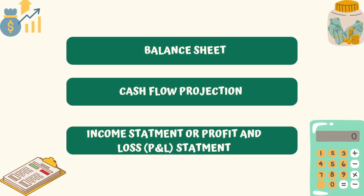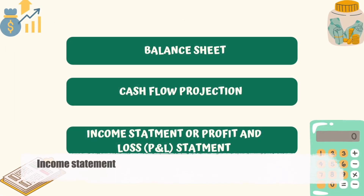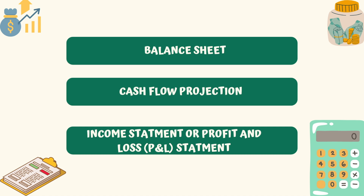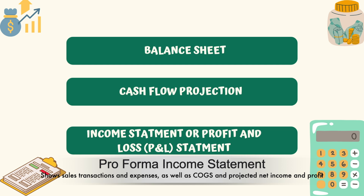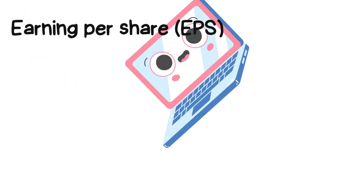Another major component of the financial plan is the income statement, which shows how the company has experienced profit and loss over a given period of time, generally three months. It is also known as a company's P&L statement or pro forma statement. It includes information about the cost of goods sold, operating expenses such as rent and utilities, net profit and loss, gross margin, and revenue streams, which are typically in the form of sales.